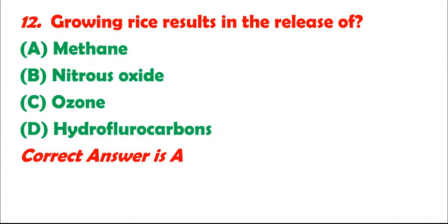Question 12: Growing rice results in the release of: A. Methane. B. Nitrous oxide. C. Ozone. D. Hydrofluorocarbons. Correct answer is A.